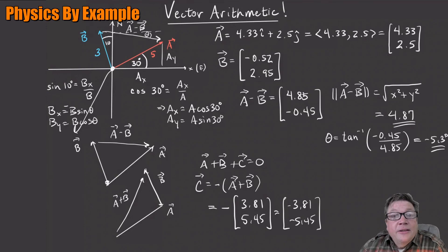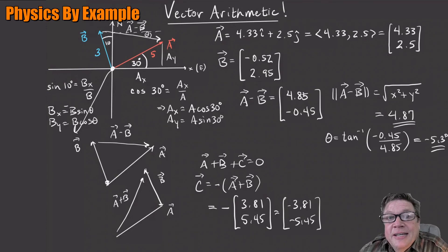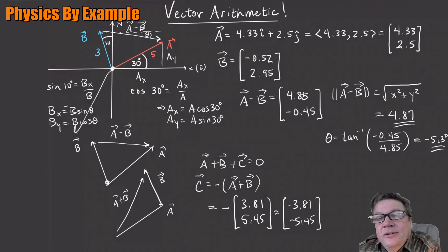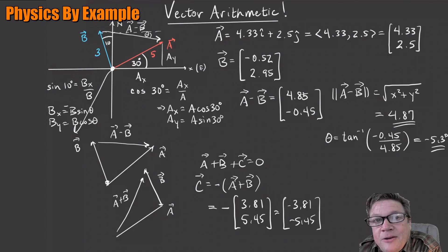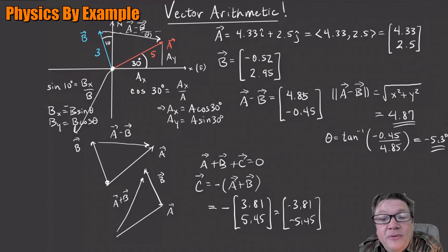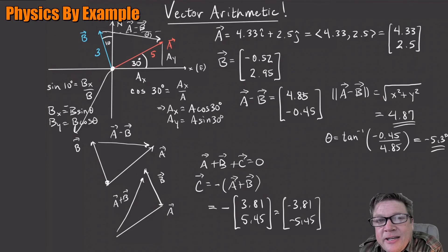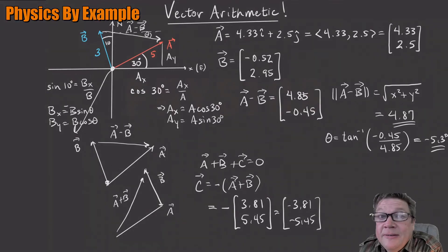So this is vector arithmetic. Next, what we're going to do is the dot product and the cross product. Getting a vector and its components and adding and subtracting is so fundamental — you'll see us do this over and over again as we go on.